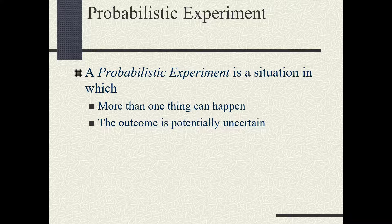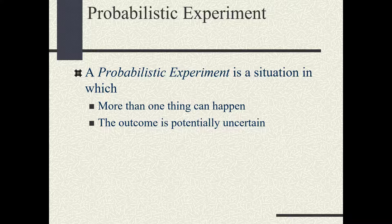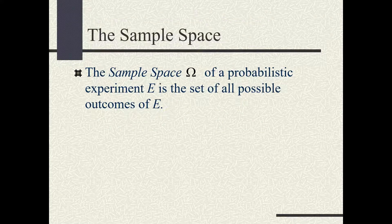For easy examples: if you have a coin with head on one side and tail on the other, under the assumption of fairness, when you toss a coin you're never sure whether it's going to be a head or a tail — so tossing a coin is a probabilistic experiment. Similarly, rolling a die is a probabilistic experiment.